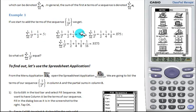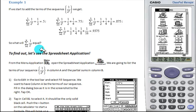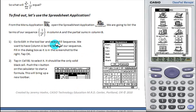We give the first four partial sums and we ask the students, what will the infinite sum be? To look at this, we'll use the spreadsheet application. From the menu application, go to spreadsheet.